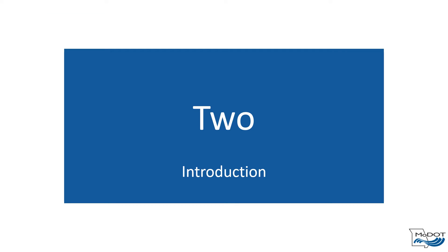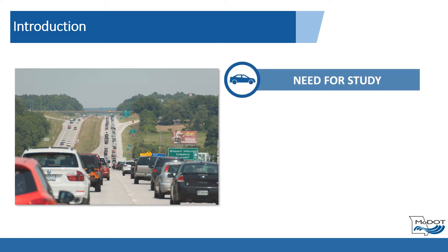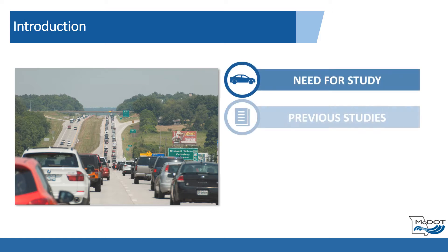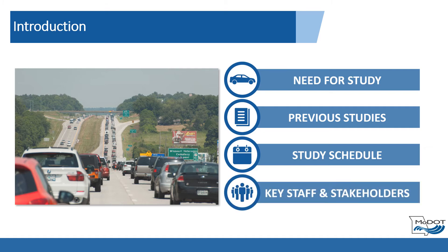Now that we've discussed stakeholder acceptance, let's introduce the Methods and Assumptions report. Section 2 is meant to provide background information on the location of the project, factors driving the need for the project, project history and previous studies, a high-level schedule with major deliverables identified, and the project team.